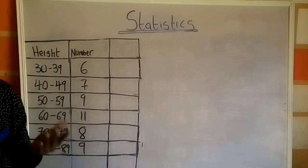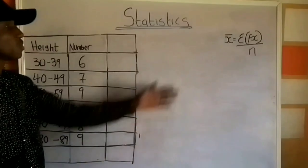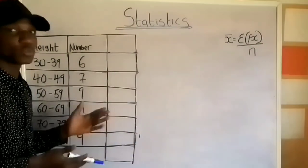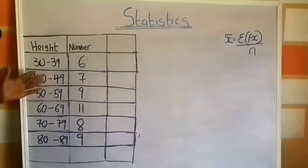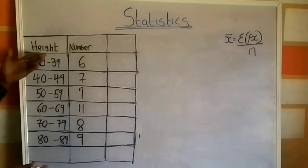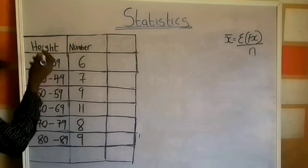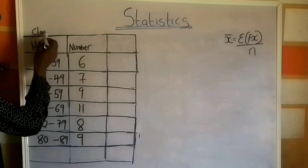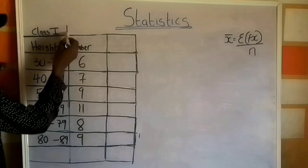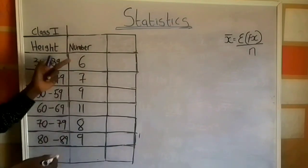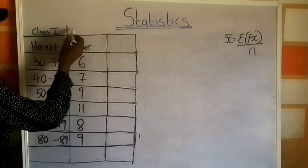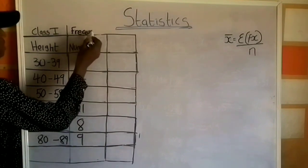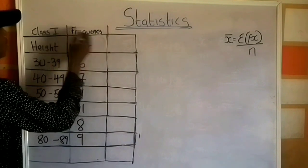The next thing is to remember your formula. This is the formula for calculating the arithmetic mean of grouped data. This is grouped data because we have the class interval — the height — and we have the numbers of plants, which is the frequency.